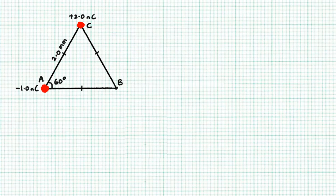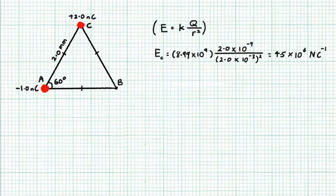Let's start with charge C. Charge C is a positive 2.0 nC charge, and point B is 2.0 mm away from charge C. Using the formula E equals KQ over R squared, the electric field strength of charge C at position B can be calculated to be 4.5 times 10 to the power of 6 N per C.